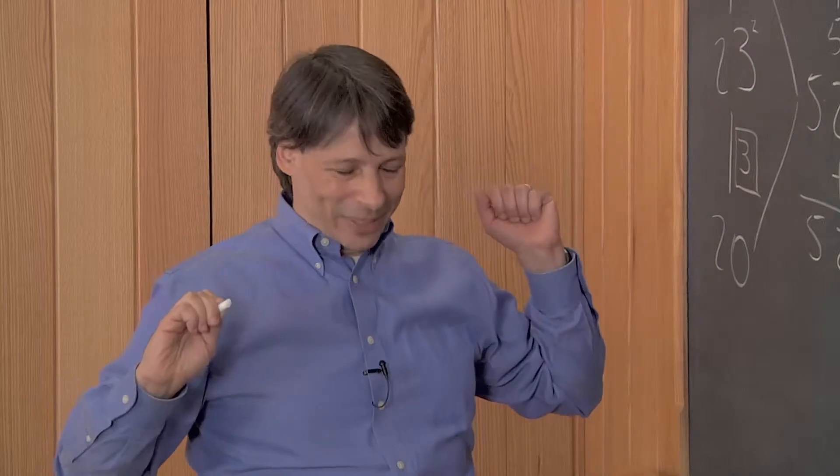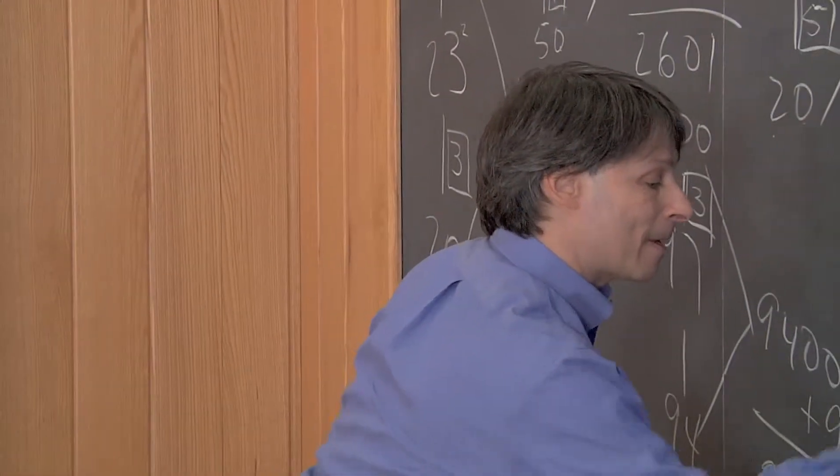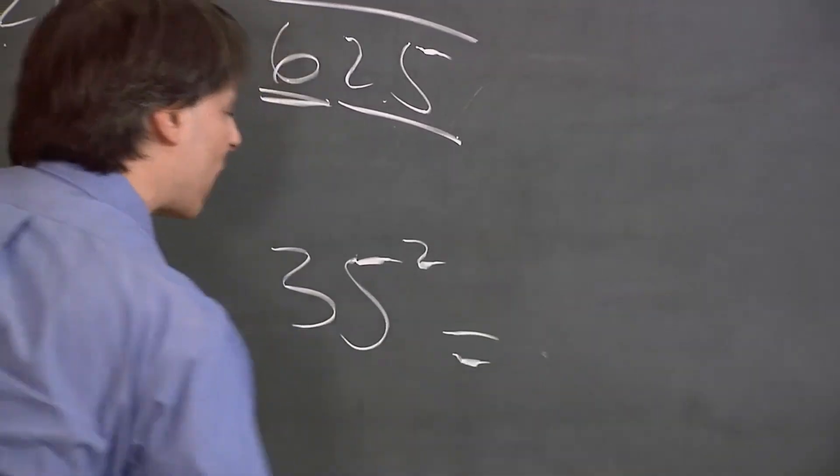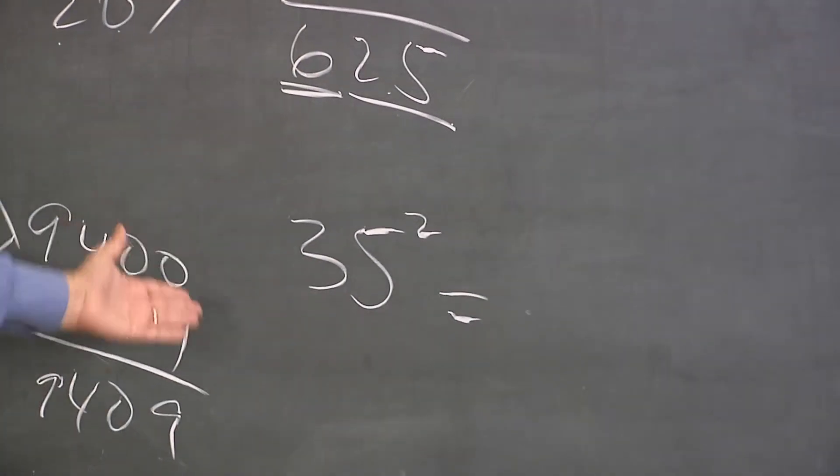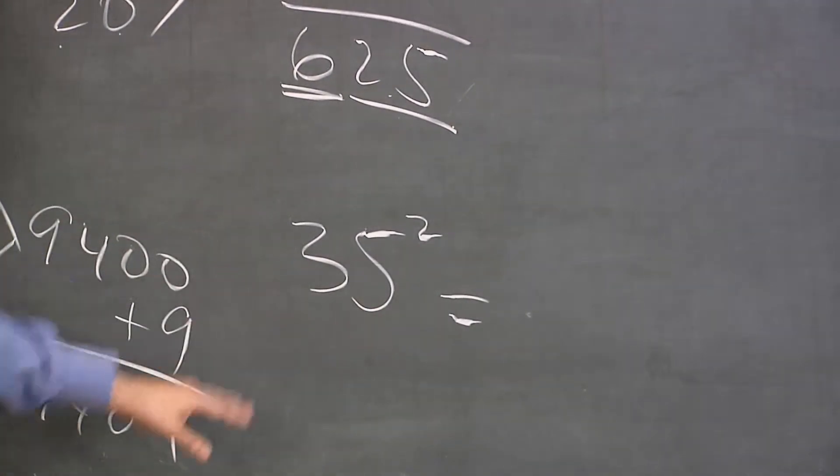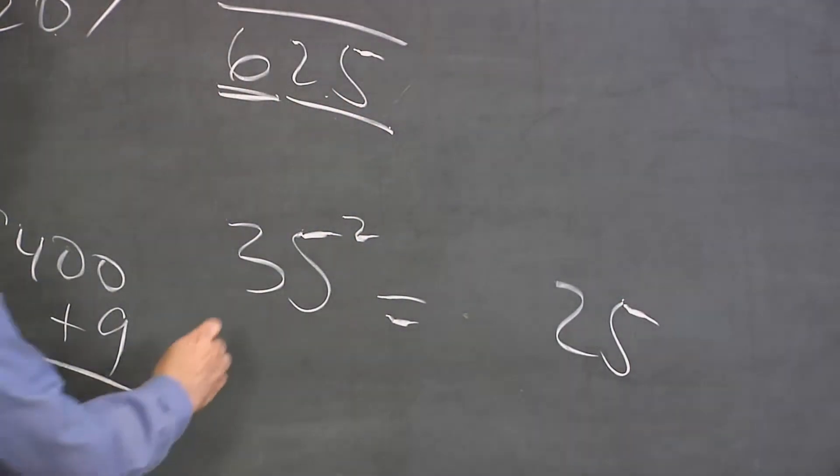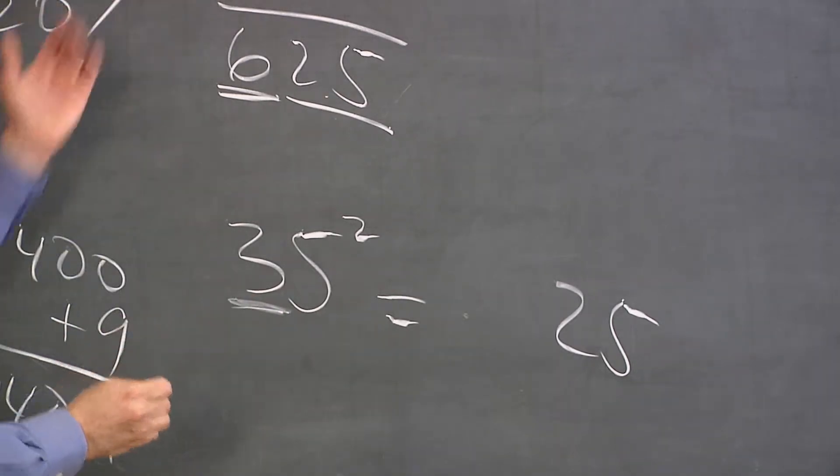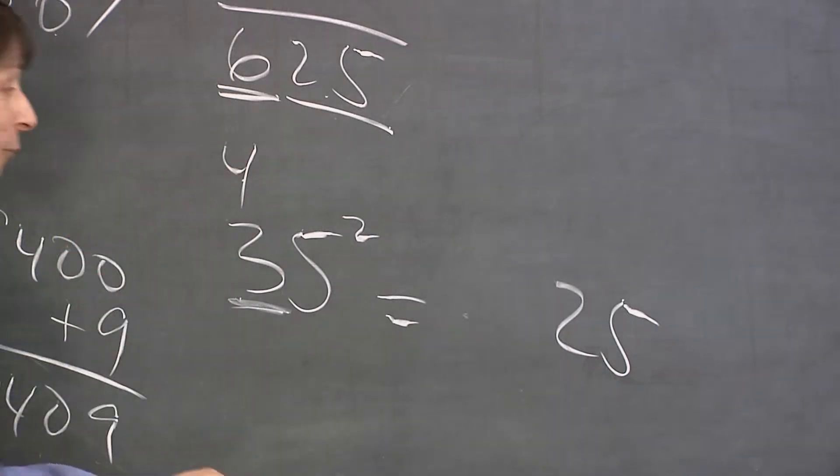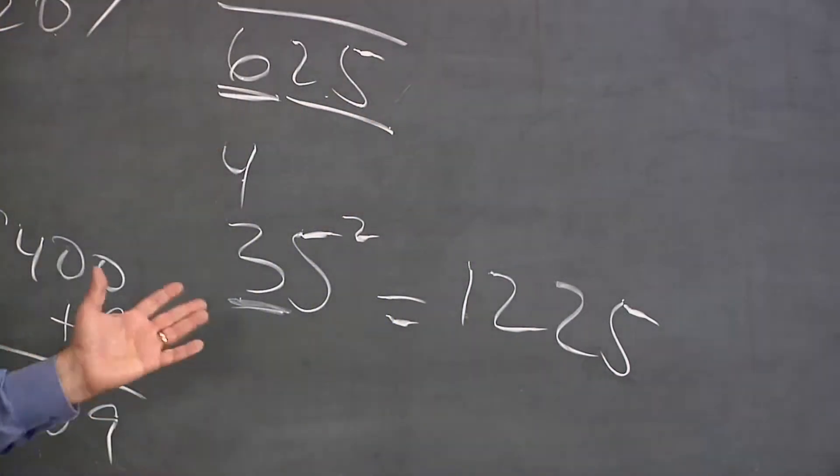All right, let's try another example. Let's say the problem was 35 squared. Okay, so again, 35 squared is going to end with 25. Not 35, 25. How does it begin? It begins by taking the first digit, 3, times the next higher digit, 4. 3 times 4 is 12, and there's your answer, 1225.